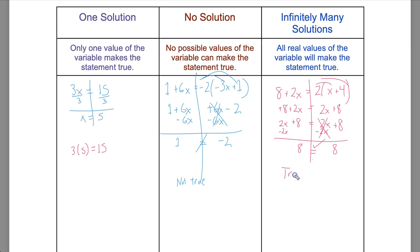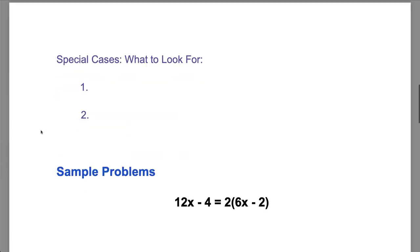So if it's a true statement, once you eliminate that variable term, it's infinitely many solutions. Which means basically any real number that I substitute in for the value of x makes a statement true. So I have infinite possibilities of what number I can substitute in to make that work. So let's look at a little bit of structure around what do we need to see in order to determine whether we're dealing with a special case or not.